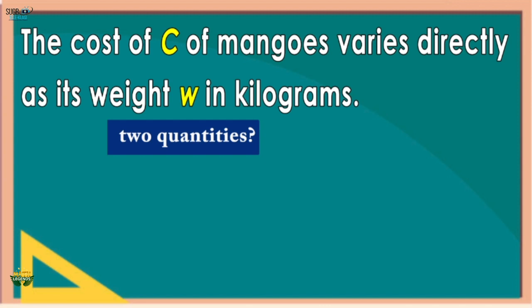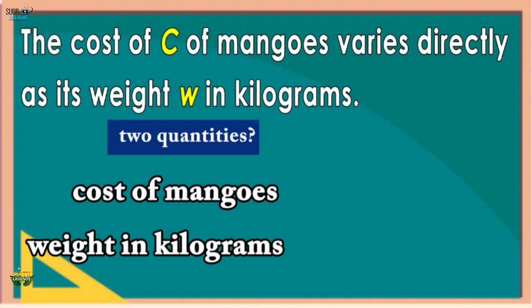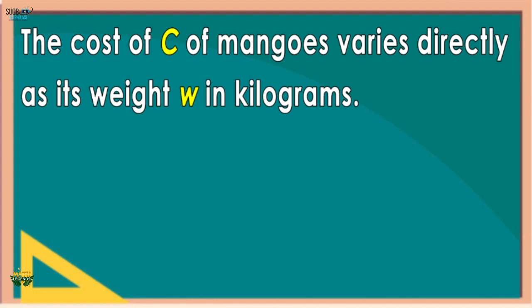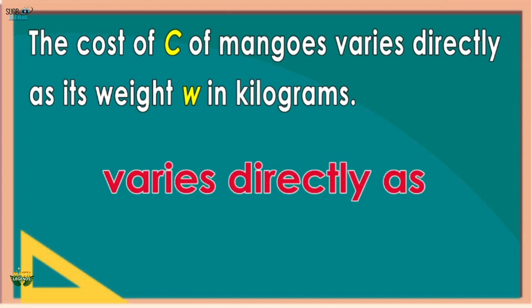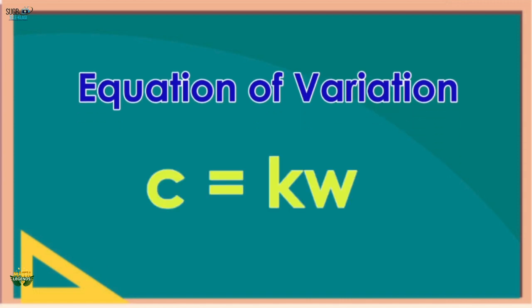How do we write the equation of a direct variation? Example number one: The cost C of mangoes varies directly as its weight W in kilograms. The two quantities are cost of mangoes and weight in kilograms. C represents cost and W represents weight. The clue is 'varies directly as.' The equation of variation is C = kW, where k is the constant of variation.